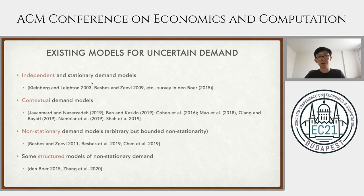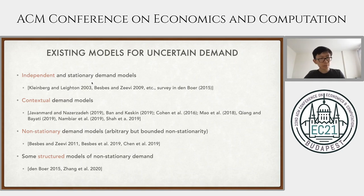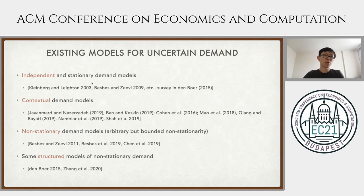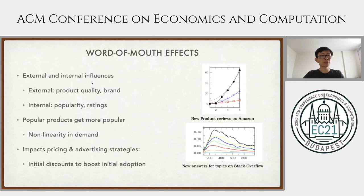The problem of dynamic pricing under uncertain demand has been studied widely. The community started with mostly independent and stationary demand models, where the relationship between demand and price is the same over different rounds, and the realization of demand has no influence over future demand. Then the community moved on to contextual demand models, which are more expressive but still stationary. More recently, people have started studying non-stationary demand models. Our paper falls into this fourth category, where we study a non-stationary demand model, but the non-stationarity is described by a structured model, which allows us to prove better regret bounds.